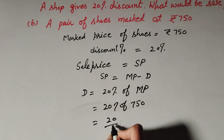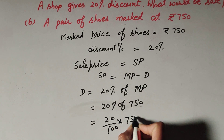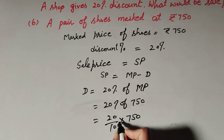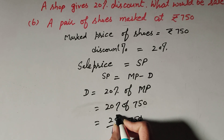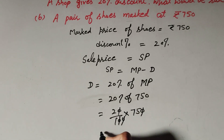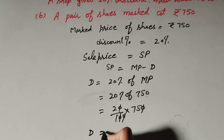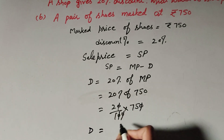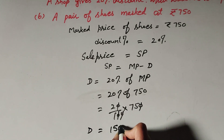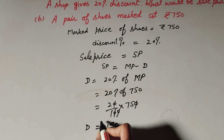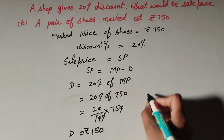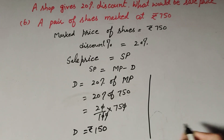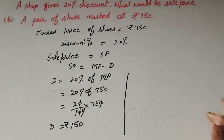So 20 over 100 multiplied by 750. The zeros in the numerator and denominator cancel, so discount equals 2 multiplied by 75, which equals rupees 150. So rupees 150 is the discount.